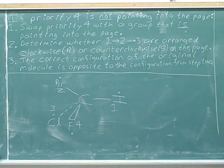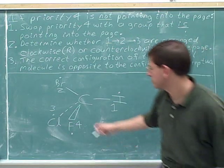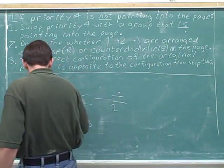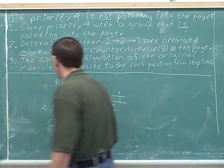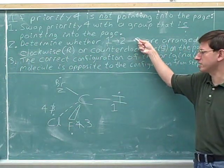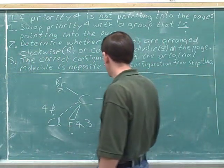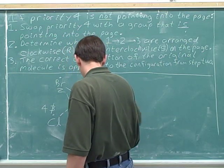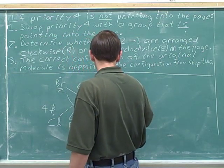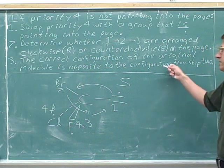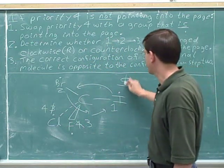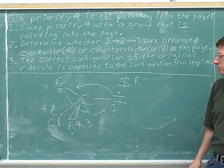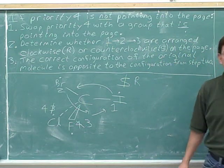Let's swap the number four so it is pointing into the page. We have to swap it with the number three. Now step two: what's the configuration of one to two to three on the page? One to two, two to three, back to one — counterclockwise, or S. Step three: before the swap, the configuration was R. So the answer is that the original configuration was R.